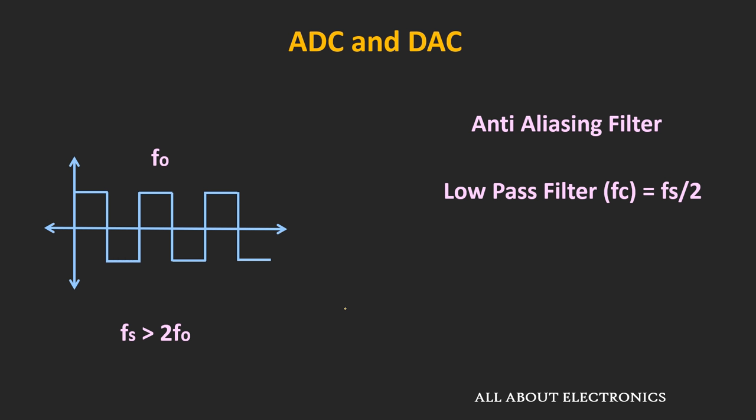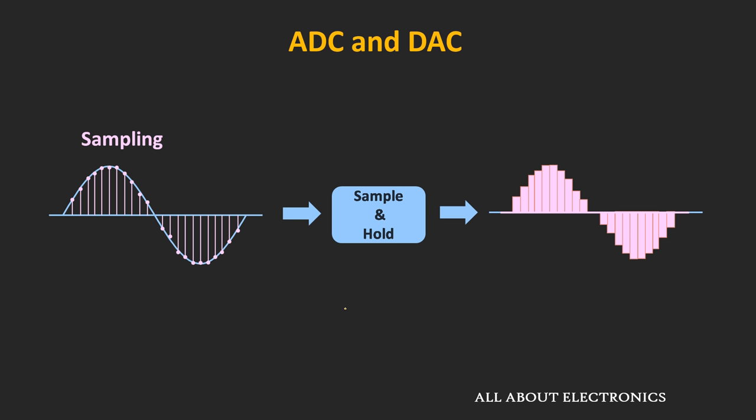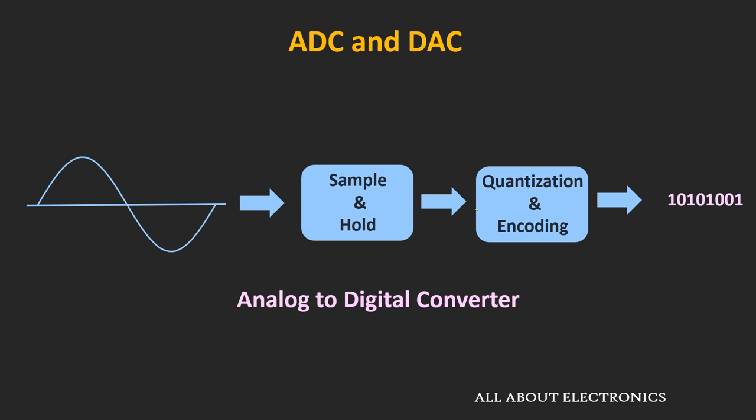During conversion, the ADC takes some time for quantization and encoding, so the signal must remain constant during that time. For this reason, a sample-and-hold circuit is always used with the ADC. This circuit samples the signal and holds the output at the same value until the next sample is taken. In the overall ADC block diagram, the signal is first sampled using the sample-and-hold circuit, then quantized and encoded.